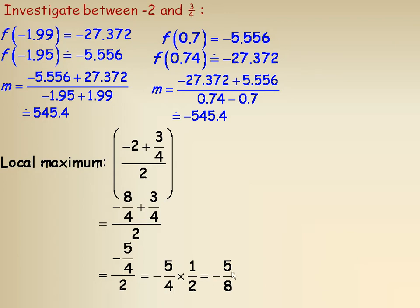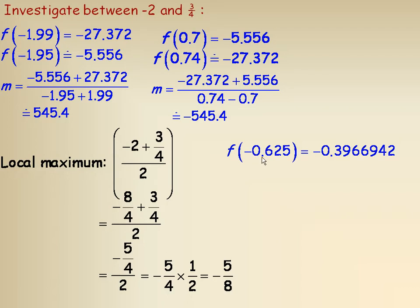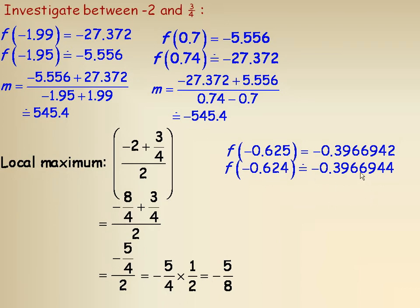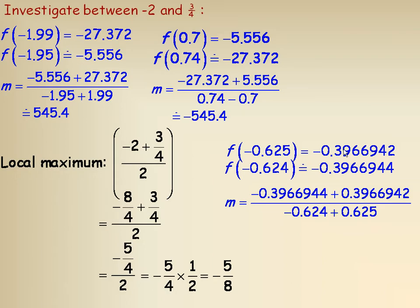To verify: at a local maximum the tangent line slope should be zero. Since −5/8 = −0.625 exactly, I plug that into the function to get the y value, then take x = −0.624 — only 0.001 away — and find the slope between the two points. The result is approximately −0.0002, very close to zero. This confirms the tangent is essentially horizontal at x = −5/8, demonstrating there is indeed a local maximum there.